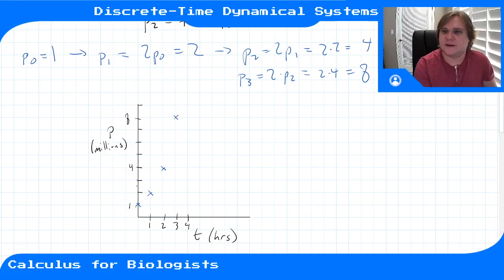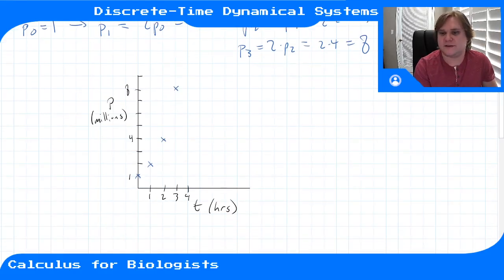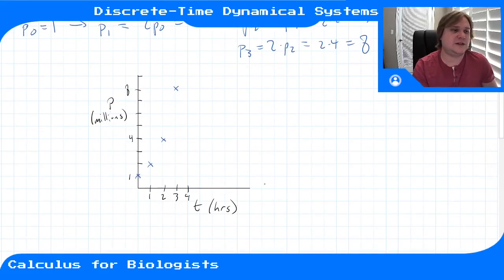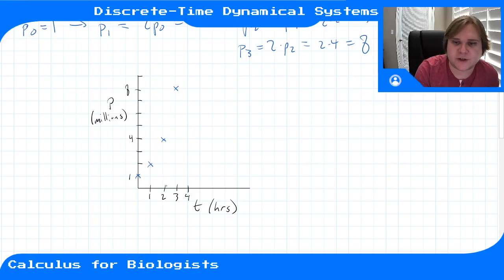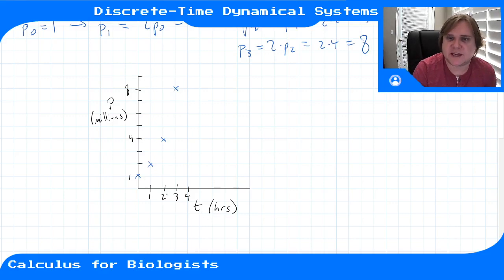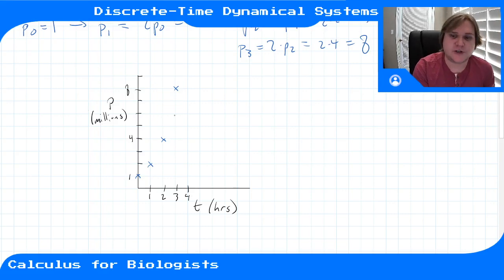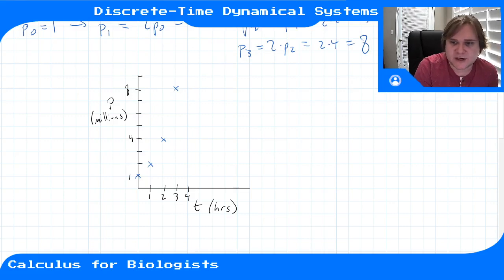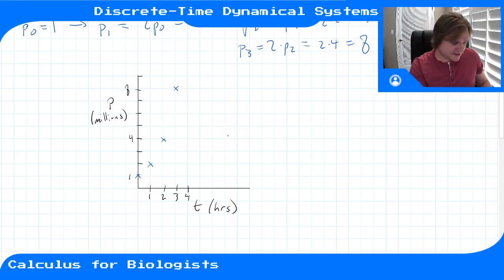This is our solution output — we're plotting time in hours versus population in millions. This is a different sort of plot for a discrete time dynamical system than the ones in the last video, which mapped population at time t to population at time t+1. This one maps a solution trajectory through the discrete time system, starting with some initial condition and iterating forward through time.